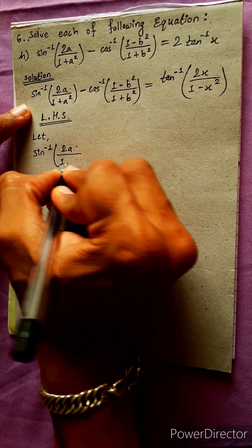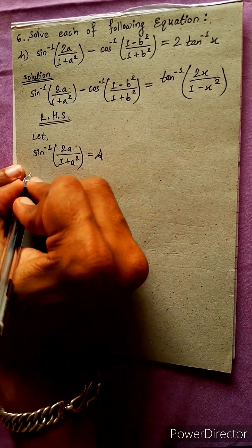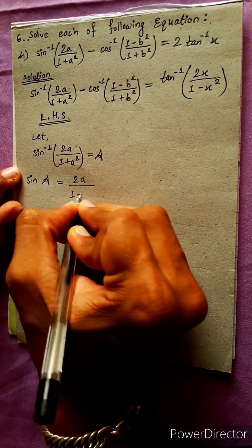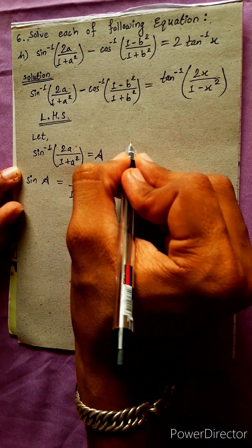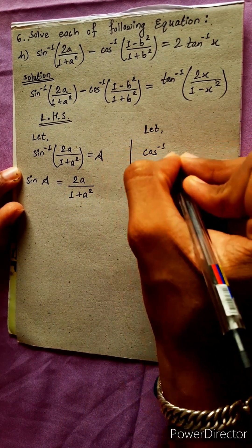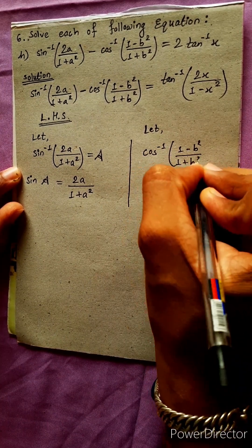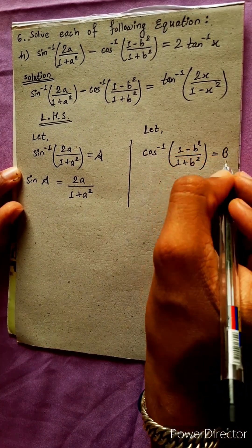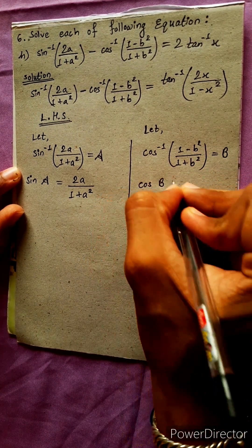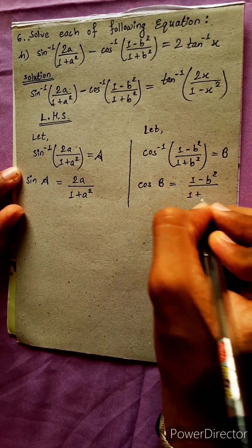Now consider: sin⁻¹(2A / (1 + A²)) equals A. And cos⁻¹((1 - B²) / (1 + B²)) equals B. Let A and B be defined accordingly. So sin(A) equals 2A / (1 + A²), and cos(B) equals (1 - B²) / (1 + B²).